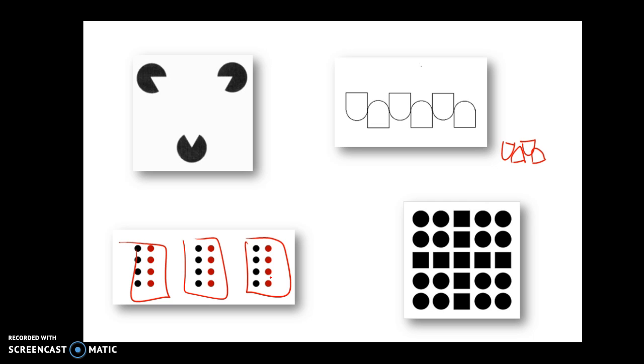And then we have something called similarity. Objects that are similar in appearance are more likely to be perceived as belonging to the same group. So a lot of people see a cross. And they basically group the squares together and they group the circles together.